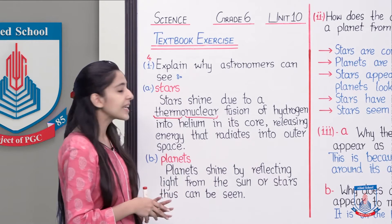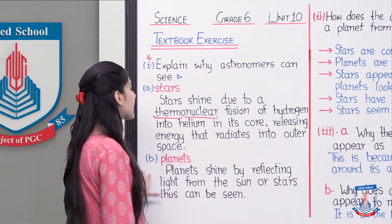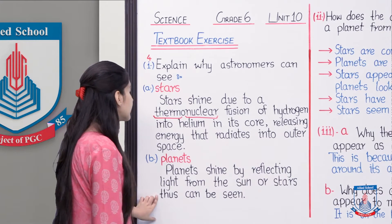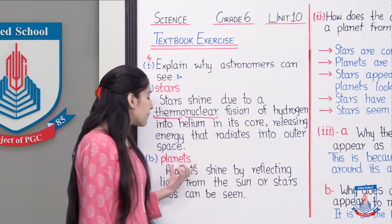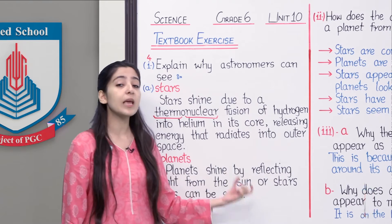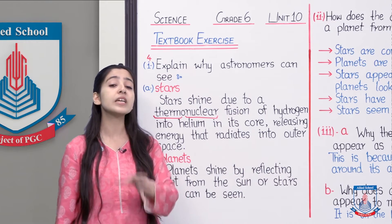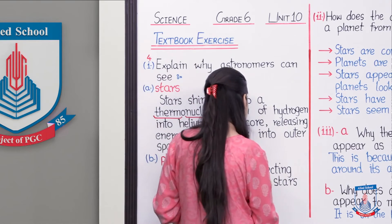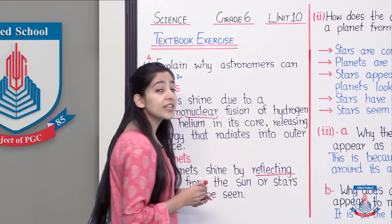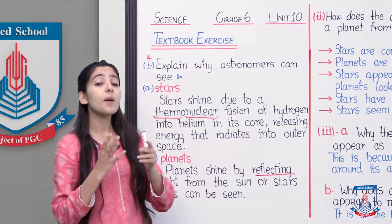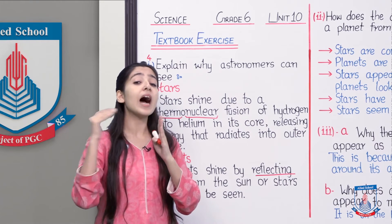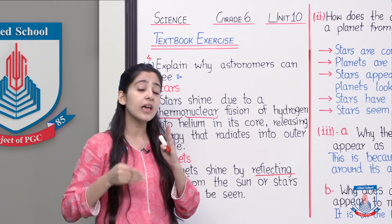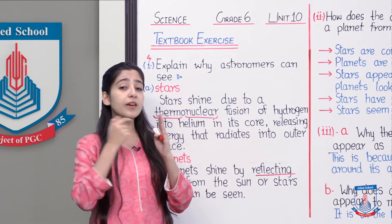Ek dafa read kar lete hain: Planets shine by reflecting light from the sun or stars, thus can be seen. Planets jo hain, woh shine karte hain by the reflection of light. Reflection ka, agar mein aapko process define kar dun — reflection is the phenomenon by which agar koi light ki ray aa rahi hai, woh kisi surface se takra jaati hai, aur takra ke apni direction ko change kar leti hai, aur bounce back ho jaati hai.